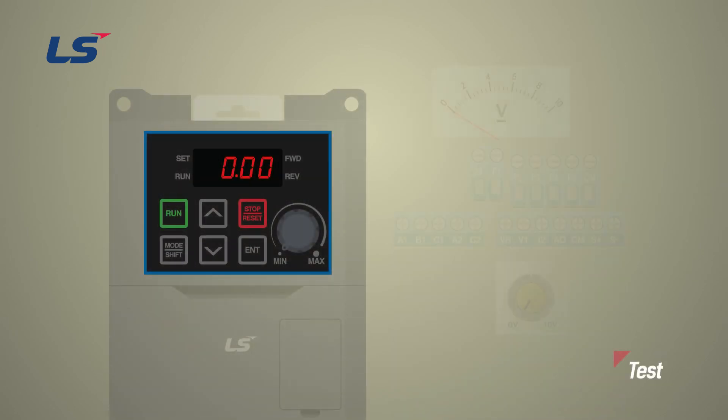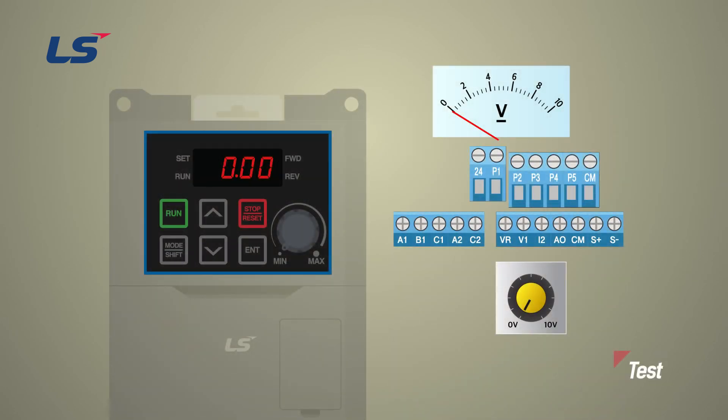Next, let's run the test under the parameter conditions set above. Wire the potential meter using internal power source to the VR, V1, and CM terminals, then rotate the potentiometer and verify that the target frequency changes. Below 2 V, the frequency command becomes 0 hertz.